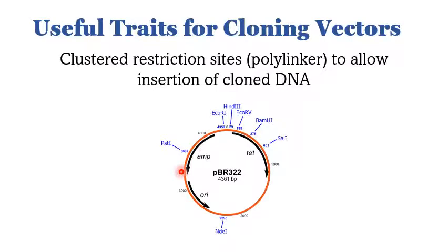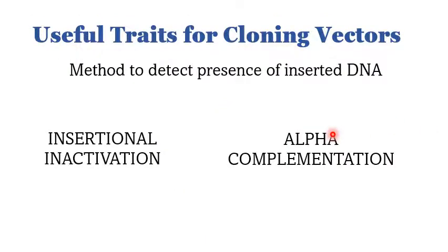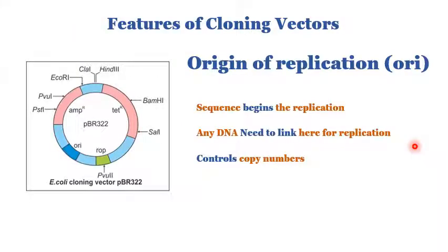Cloning vectors also have clustered restriction sites, also called multiple cloning sites or polylinkers, which allow insertion of cloned DNA. By cutting with specific restriction endonucleases, we can obtain many linking sites. Additionally, methods to detect the presence of inserted DNA are made easy on cloning vectors through processes like insertional inactivation or alpha complementation.